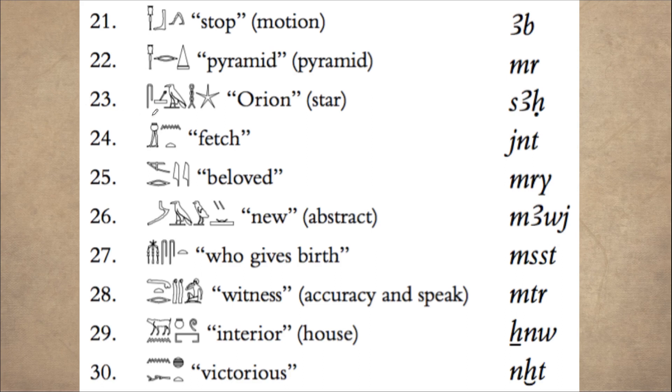Number 23, s, sa, and a, the vulture is a, ha, and then a determinative in the shape of a star. Altogether, sah, it's the name of Orion in Old Egyptian.